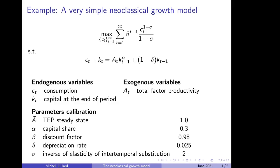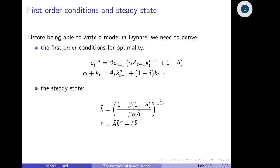You cannot bring directly an optimization problem to Dynare. First you need to derive the first order optimality conditions and it is this equation that you are going to communicate to Dynare. There are two first order conditions for optimality. The first one is an Euler equation that relates today's marginal utility to tomorrow's marginal utility taking into account the evolution of capital marginal productivity. And we need to repeat the budget constraint.